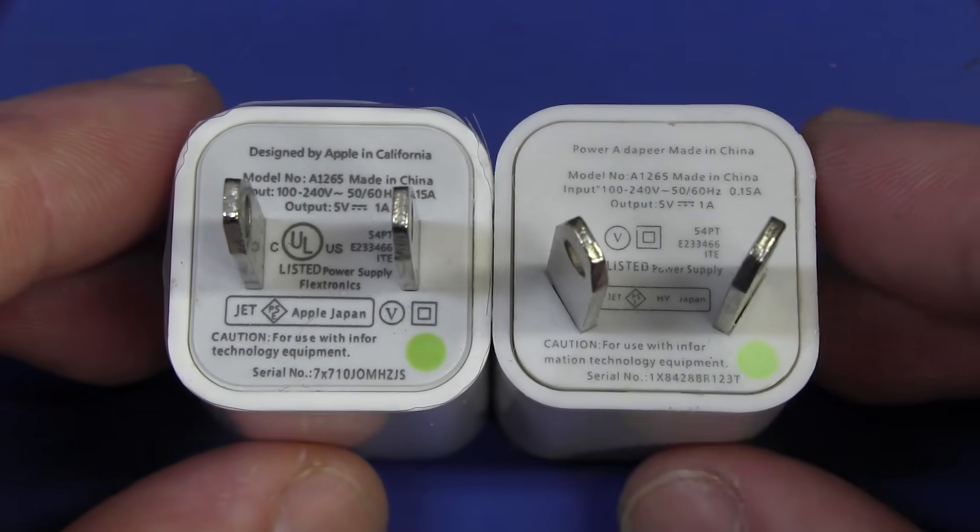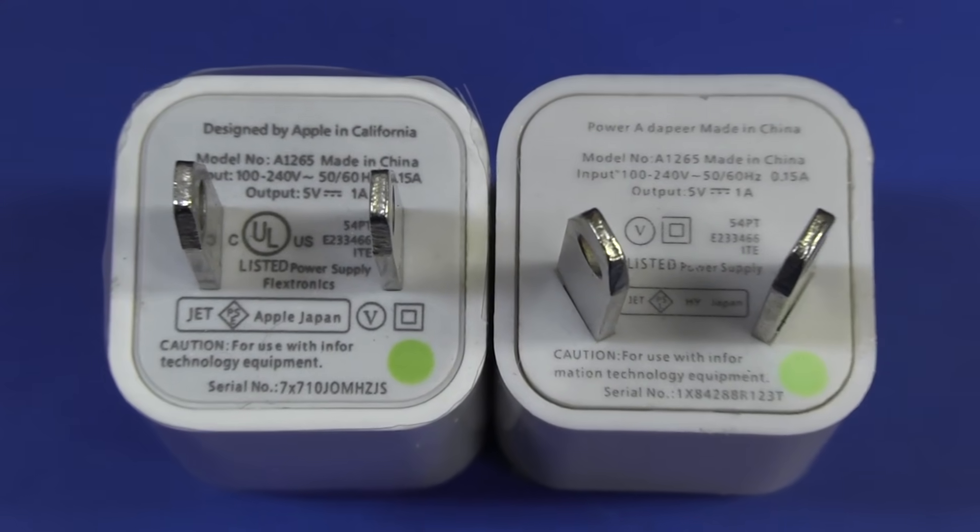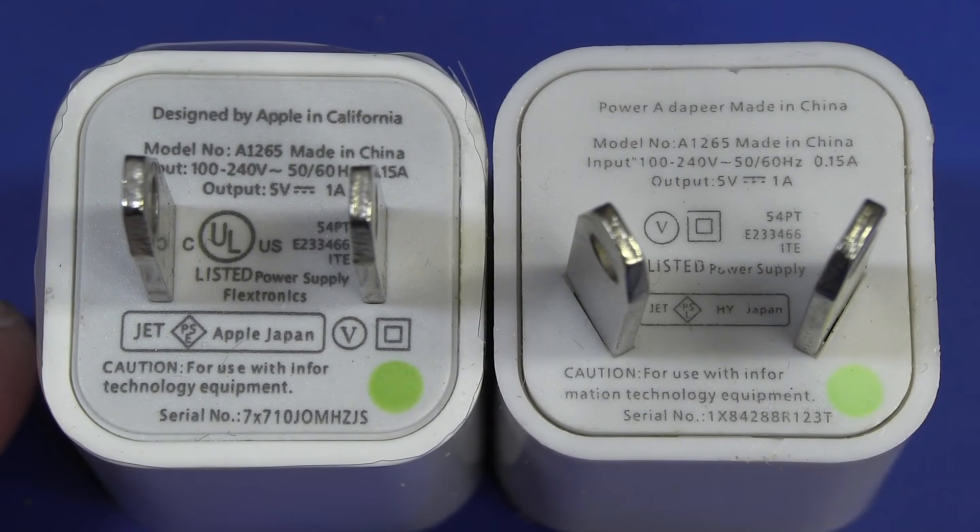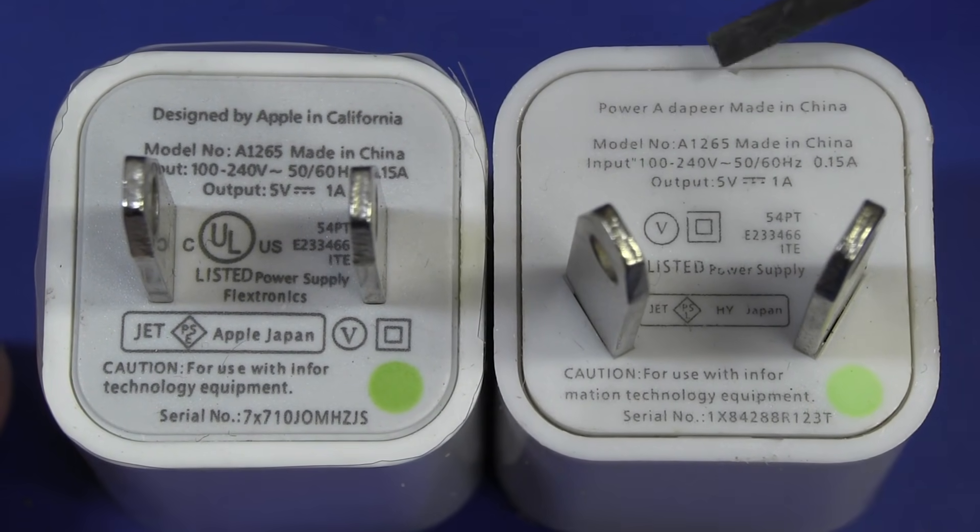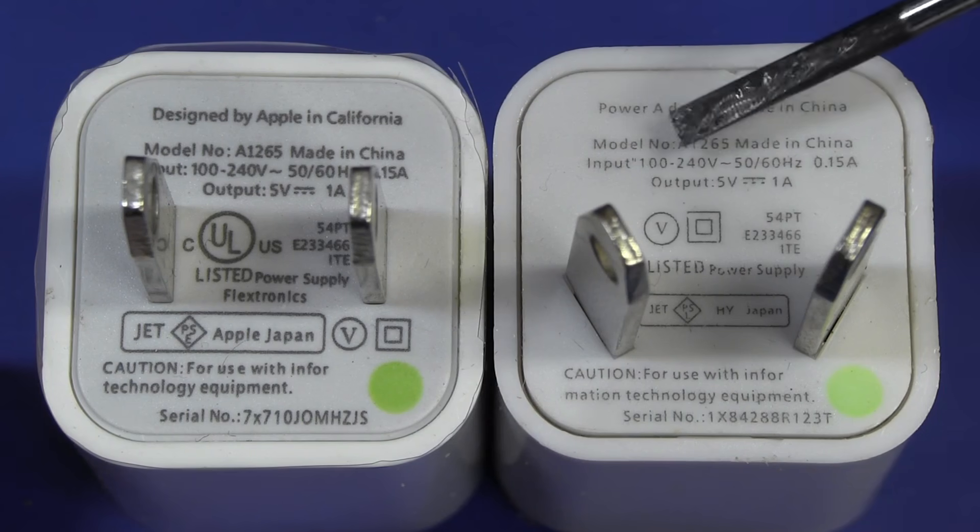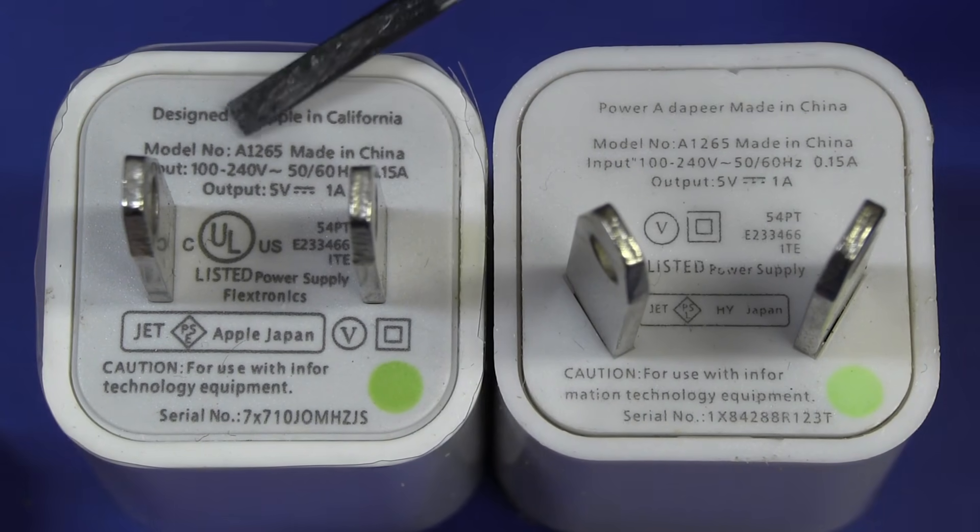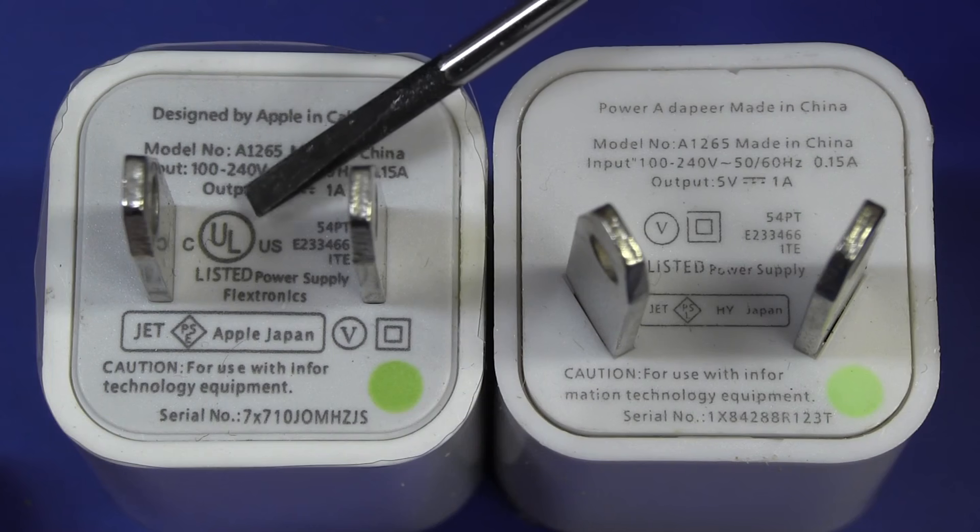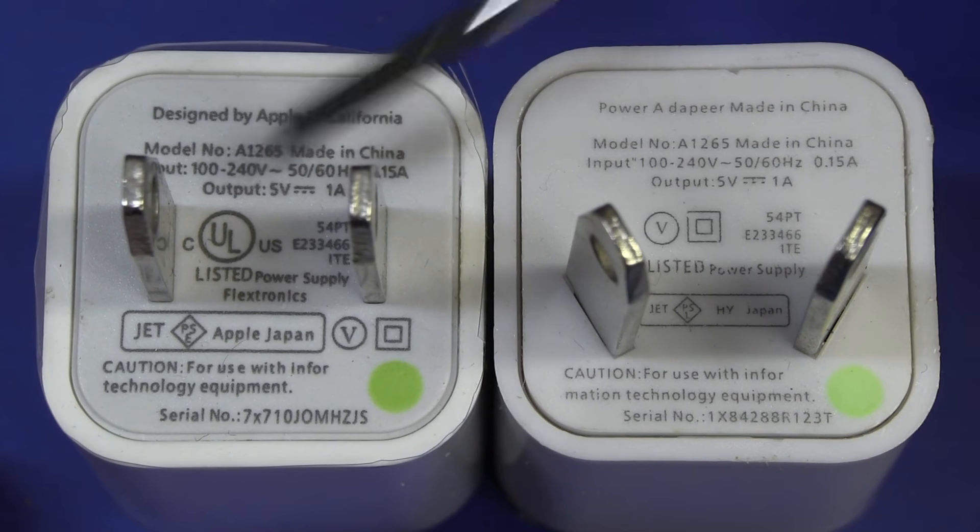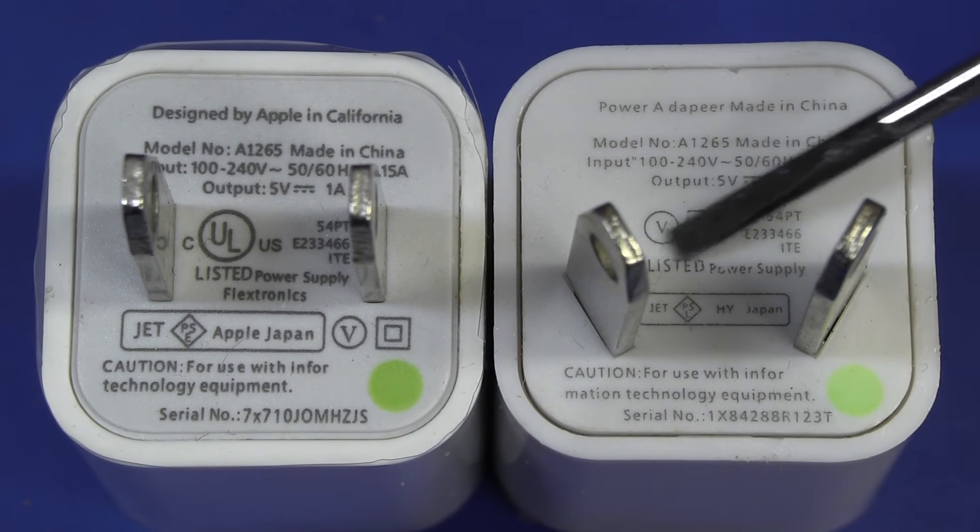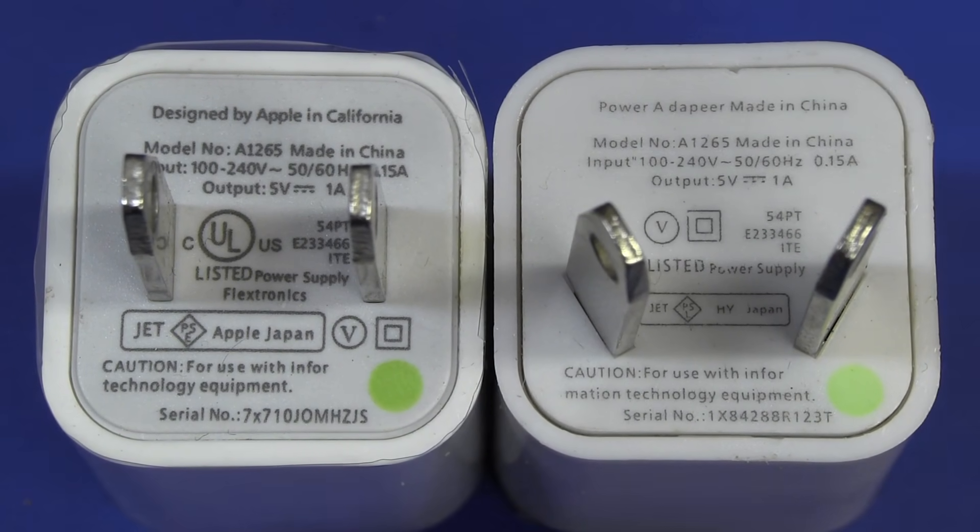We have two types here. We have the one on the right, check it out, Power Adapt Ear, made in China. So it's the model number A1265. And the one on the left here is supposedly the genuine one, designed by Apple in California. And you'll notice the differences. This one is UL listed under Writers Laboratory. This one doesn't have any UL marking at all, though it says it's a listed power supply.